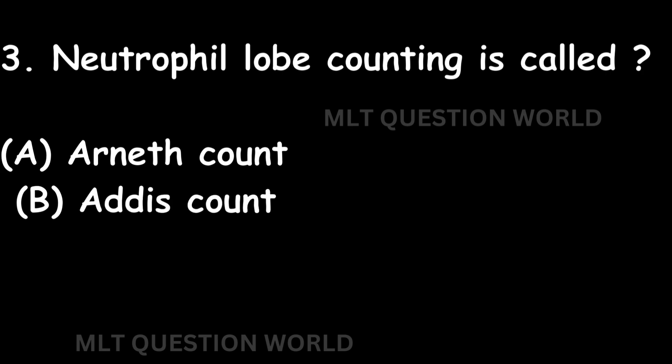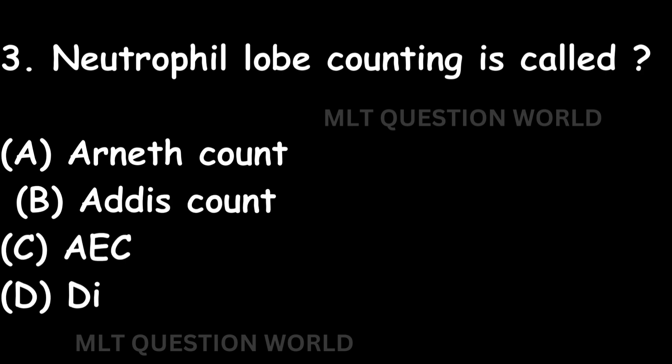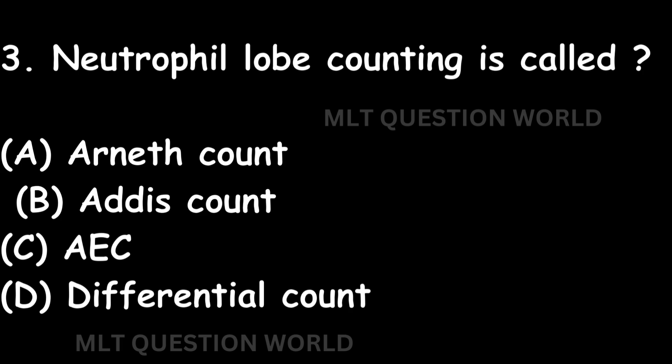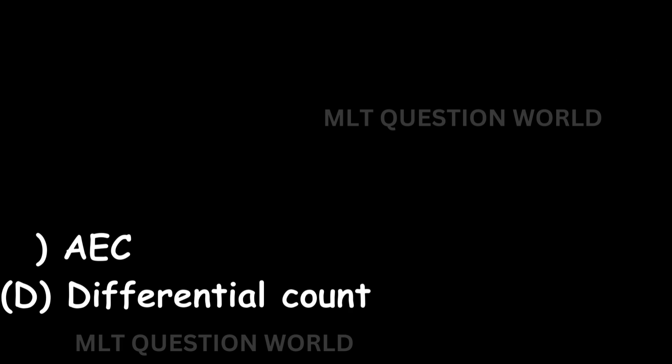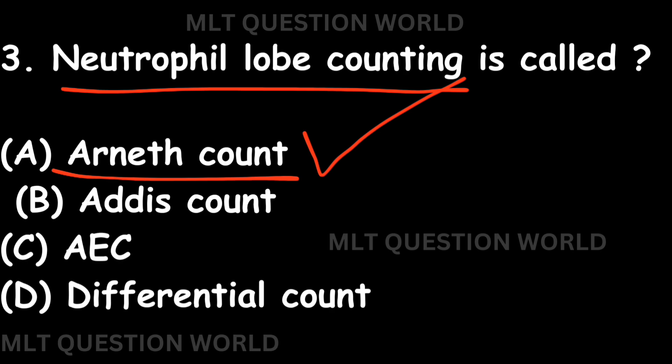Question number three: Neutrophil lobe counting is called — Option A: Arneth count. Option B: Addis count. Option C: AEC. Option D: DC. The right answer is Option A: Arneth count. Neutrophil lobe counting is called Arneth count. Addis count is done with a urine sample to detect the cells present in it.